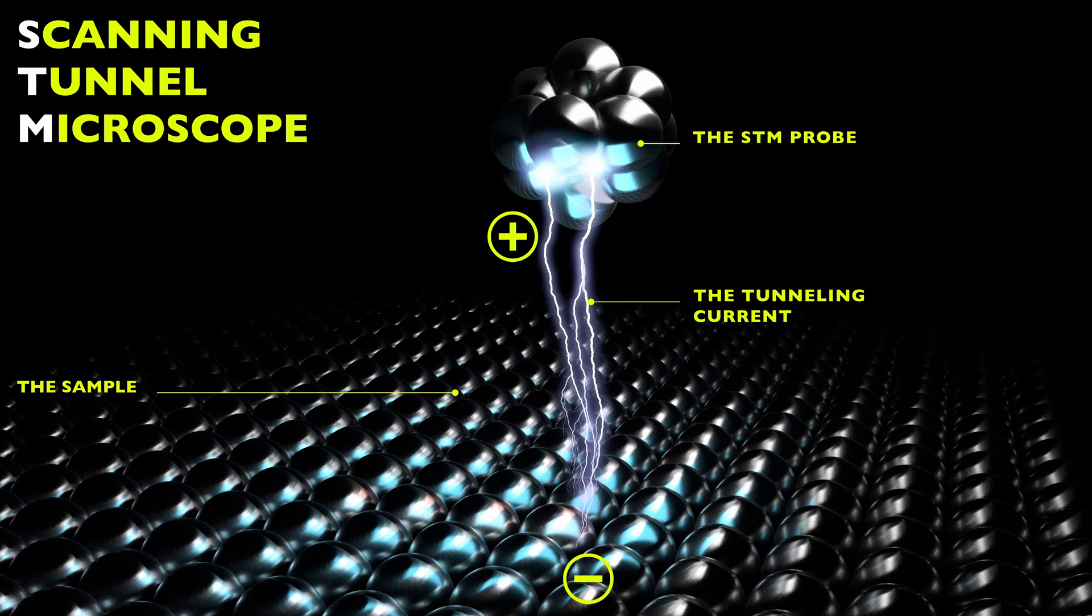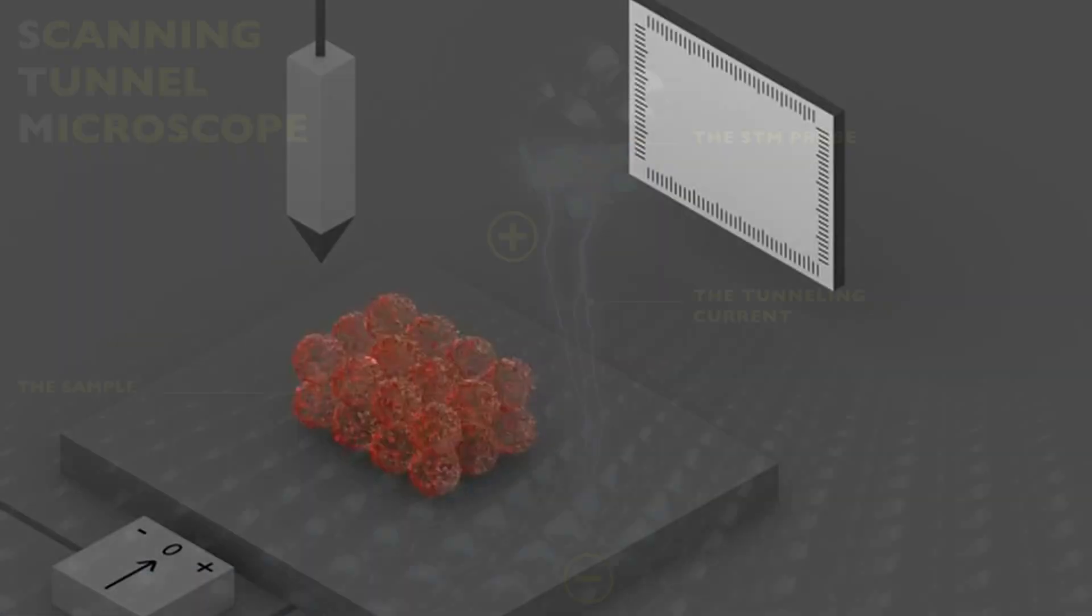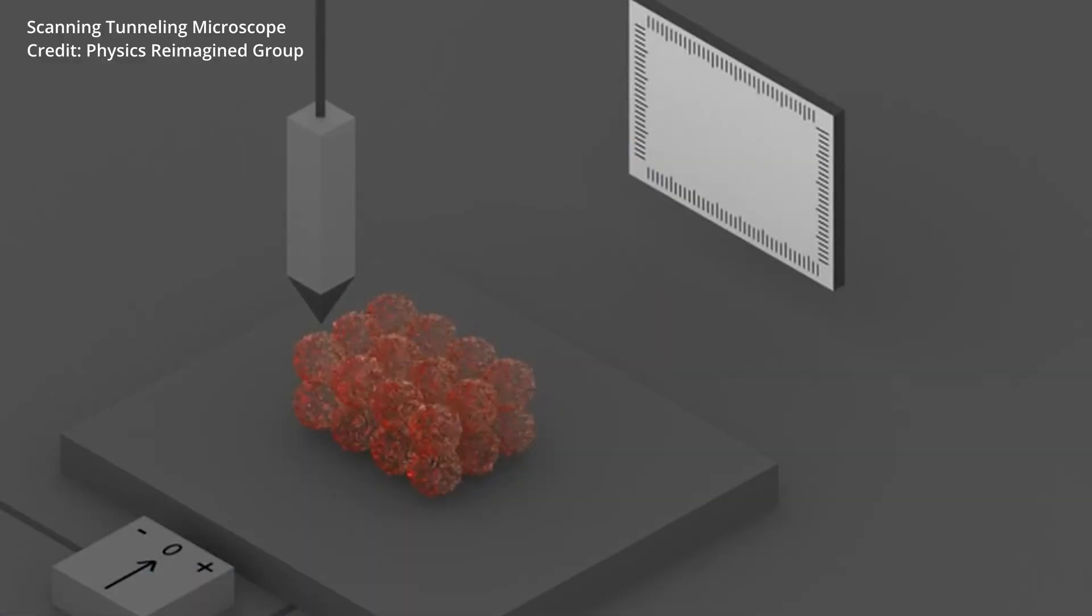For our intents and purposes, you can consider that the gap between the surface and the tip to be an energy barrier the electron sees. The probability of quantum tunneling depends sensitively on the barrier width.